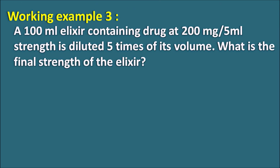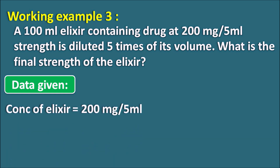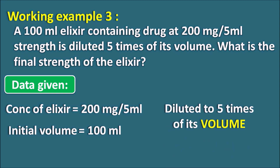Let us go with working example 3. A 100 ml elixir containing the drug at a strength of 200 mg per 5 ml is diluted to 5 times its volume. What is the final strength of the elixir? This is the reverse process — we are diluting the alcoholic preparation. The initial concentration is 200 mg per 5 ml, the initial volume is 100 ml, and it is diluted to 5 times its volume.